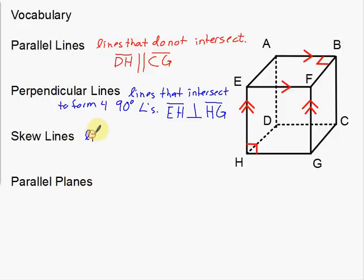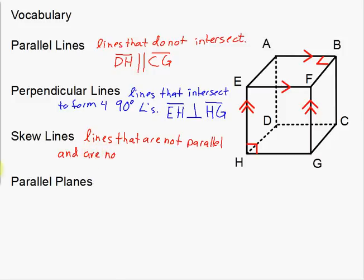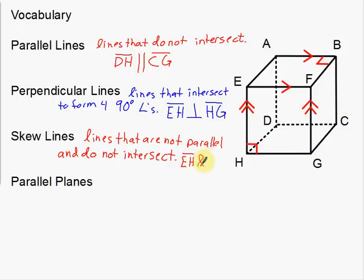So skew lines are lines that are not parallel and do not intersect. An example of this would be EH and CG. There are many examples of skew lines even within this cube, but that's just one example.